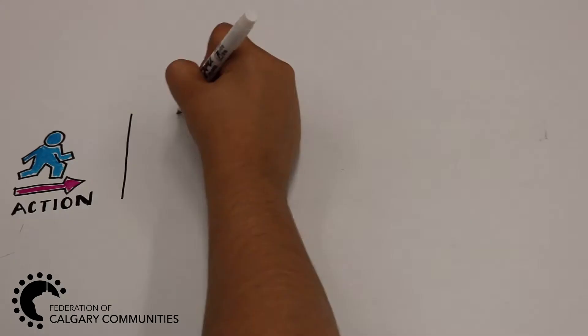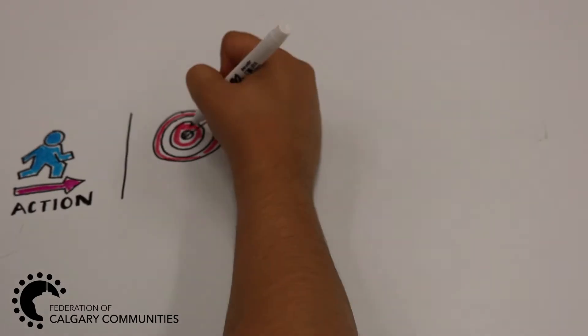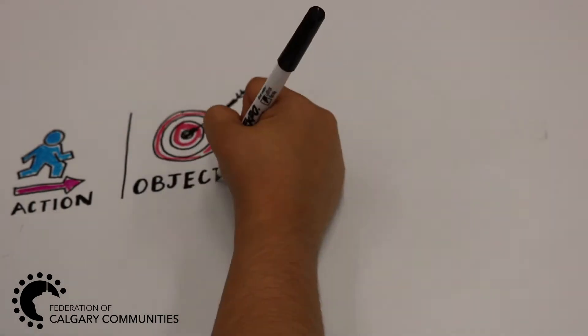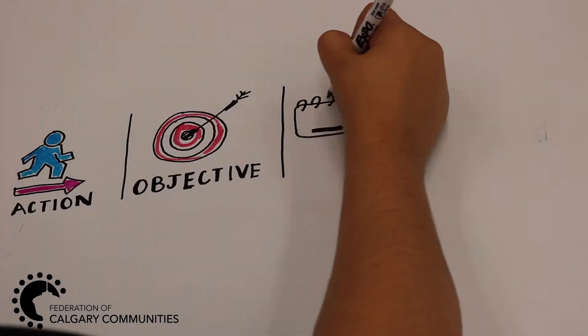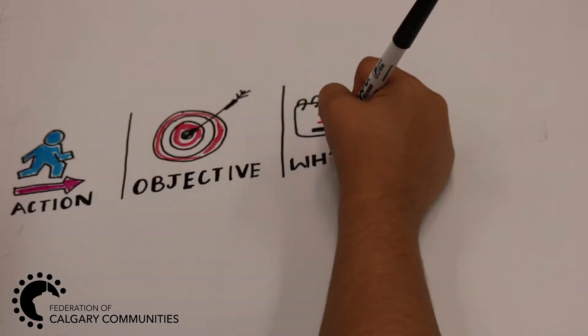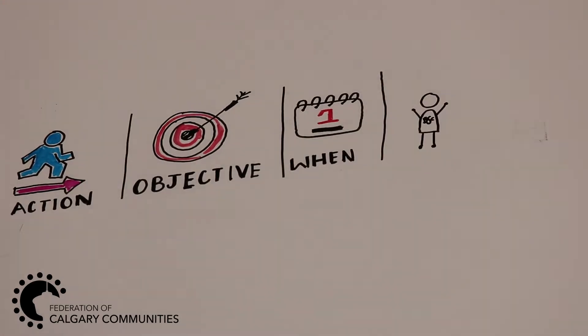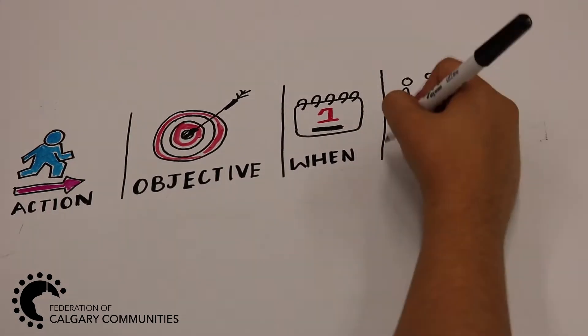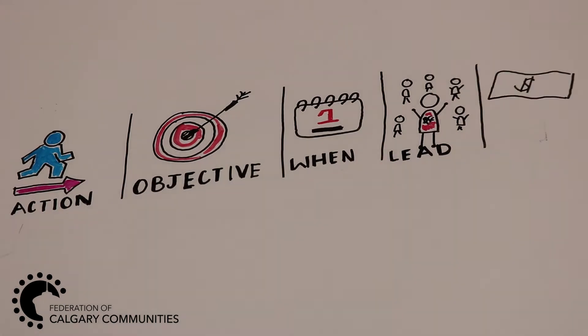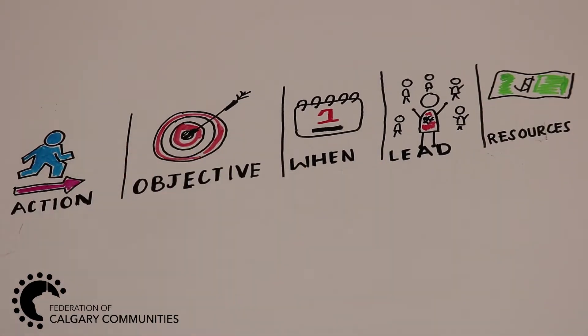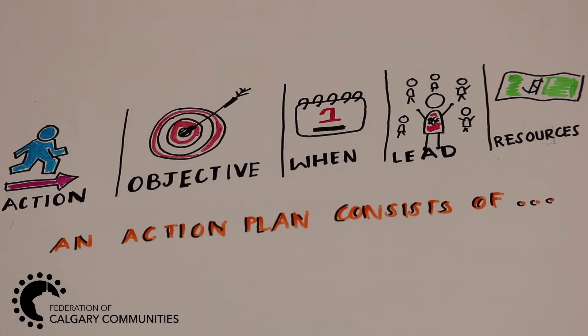An action plan consists of the action or activity, the objective and purpose of your goal, setting a time for when the action will take place and when it will end, who will take on leadership roles, and finding the right resources.